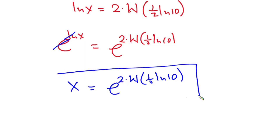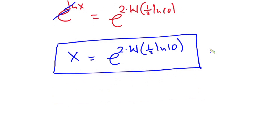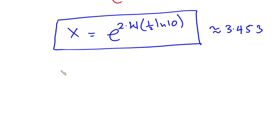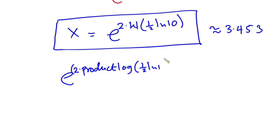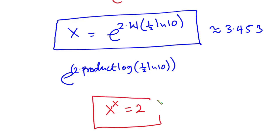This is our final answer, and it is approximately equal to 3.453. From Wolfram Alpha, this is e to the power two times W of one half natural log of 10. Before I leave you, go ahead and try this and leave your answer in the comments: x to the power x is equal to 2. I hope you enjoyed watching this video — please give it a thumbs up, and thanks a lot for watching. See you in the next video!